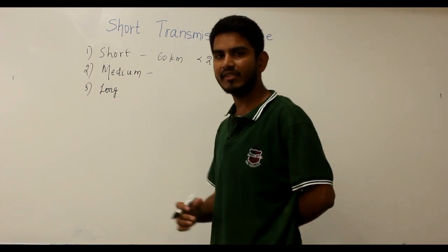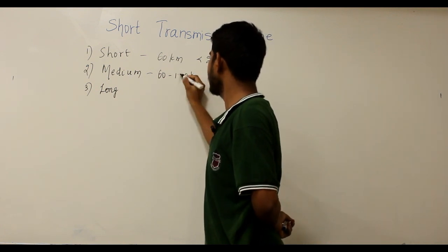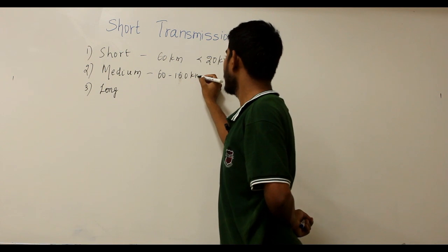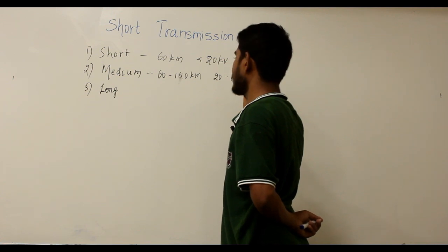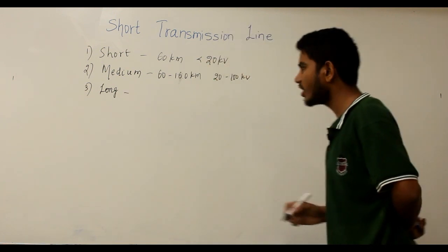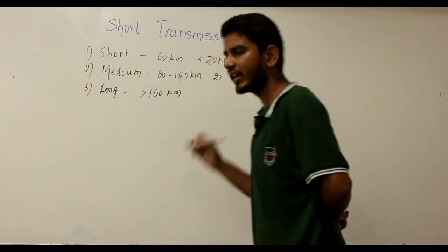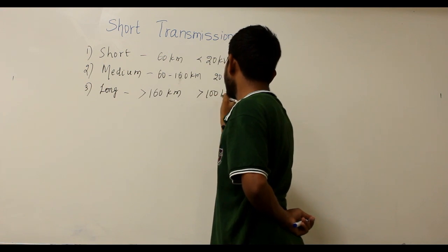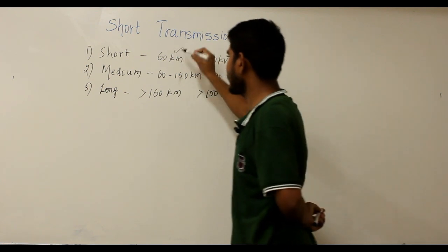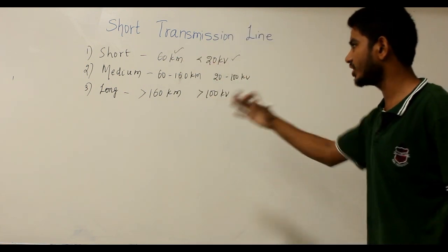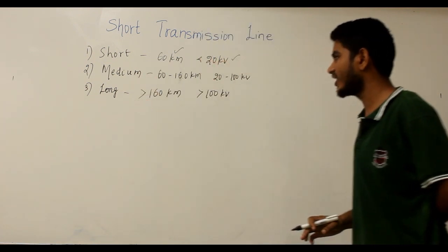Medium distance transmission lines have a line length between 60 and 160 kilometers and a line voltage between 20 kV and 100 kV. Long distance transmission lines have a line length greater than 160 kilometers and a line voltage greater than 100 kV. So based on line voltage and line length, you can classify transmission lines into short, medium, and long distance types.